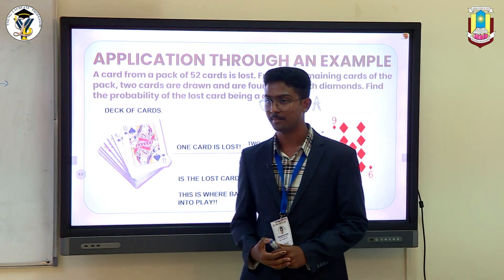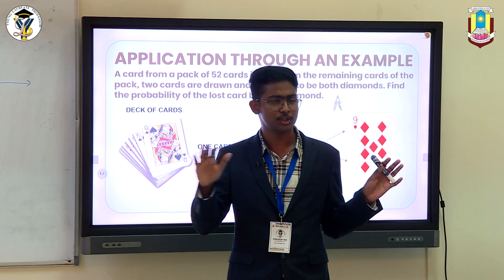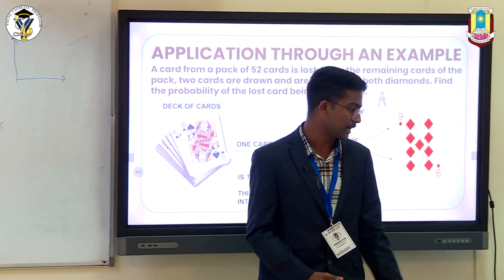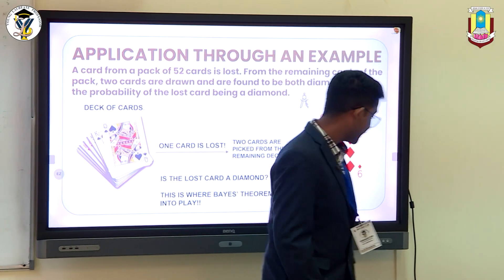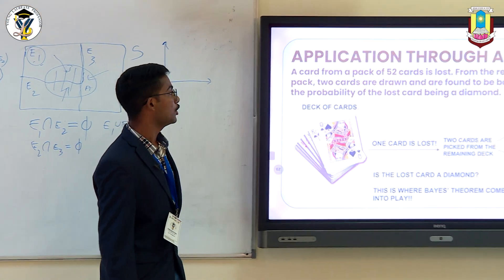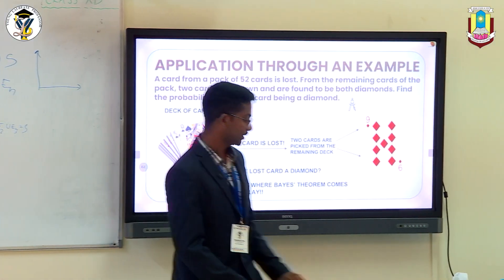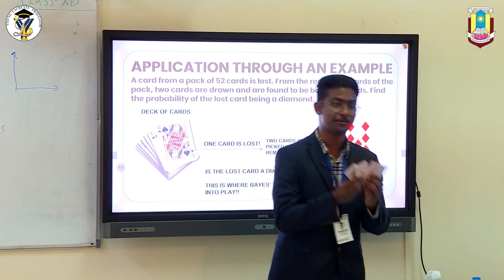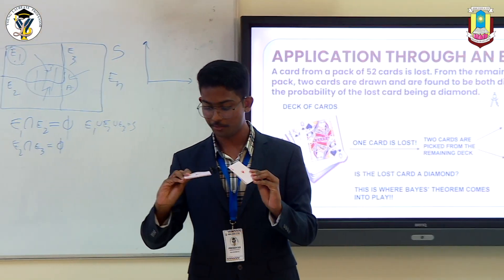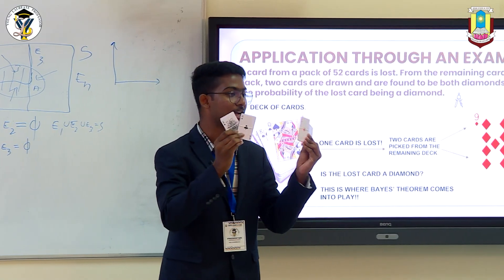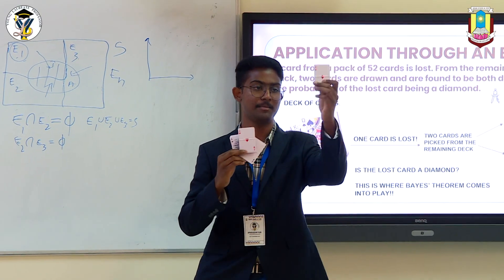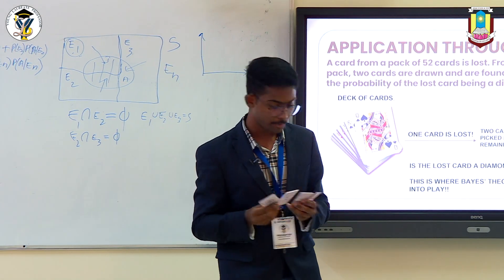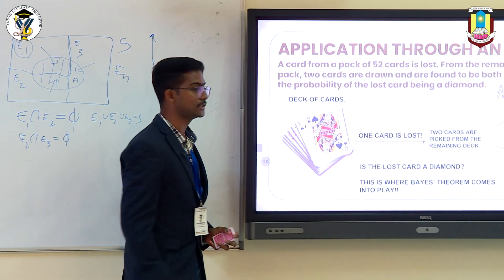Let us solve a question using Bayes' Theorem. I'll teach you guys how to approach and effectively solve questions using this theorem. A card from a pack of 52 cards is lost. I hope all of you guys have already seen a standard set of 52 playing cards — it consists of 4 suits of 13 cards each: a suit of diamonds, a suit of hearts, a suit of clubs, and a suit of spades. A card from this pack of 52 cards is lost.